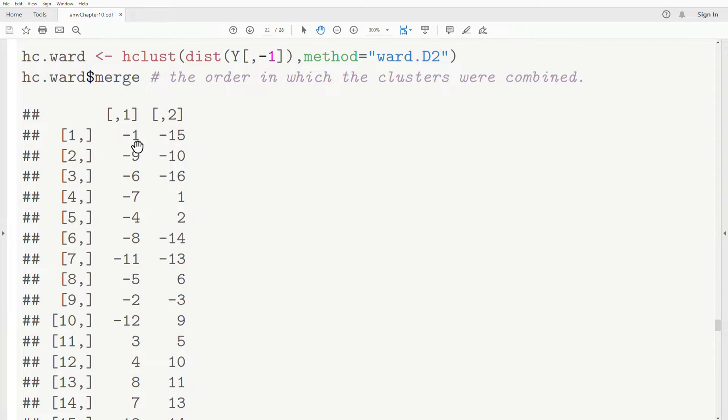So in step one, observation one and 15 were combined. Step two, observation nine and 10. Step three, observation six and 16 were combined. In step four, observation seven and the cluster created in step one are combined.